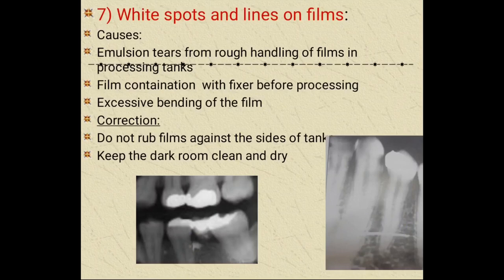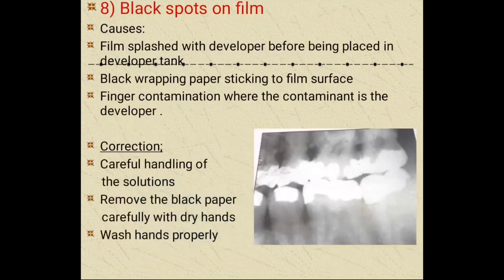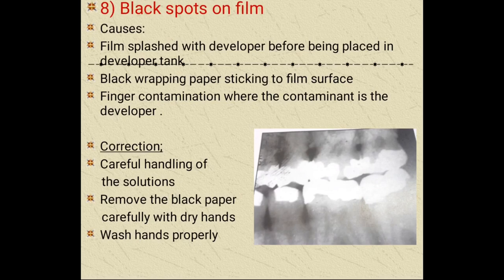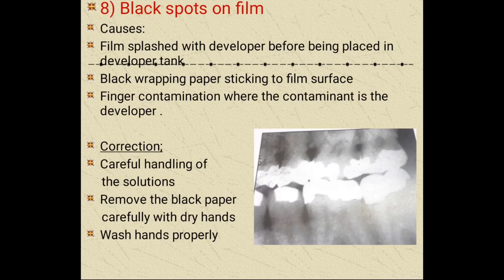Black spots on the film are caused by film being splashed with developer before being placed in the developer tank, black wrapping paper sticking to the film surface, or finger contamination where the contaminant is developer. Correct by careful handling of the solution, removing the black paper carefully with dry hands, and washing hands properly. Black lines are caused by static electricity — electrical discharges that produce visible light — occurring on the surface of the emulsion when film is removed rapidly from the interleaving paper.